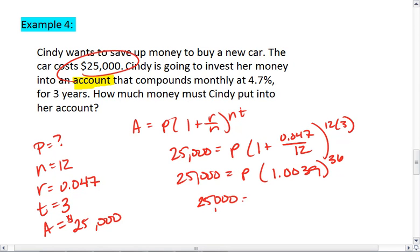25,000 equals P times 1.151. P equals 25,000 divided by 1.151, which gives us 21,718.21.